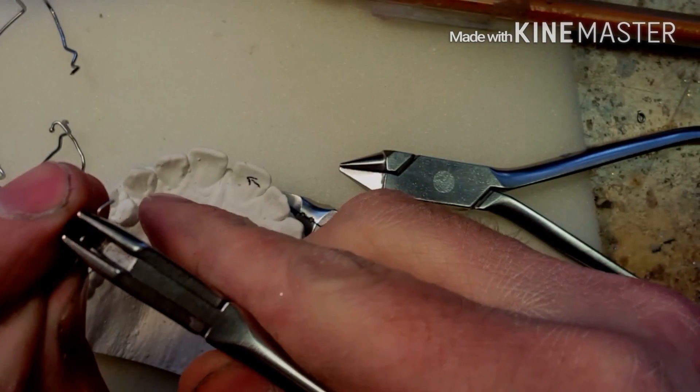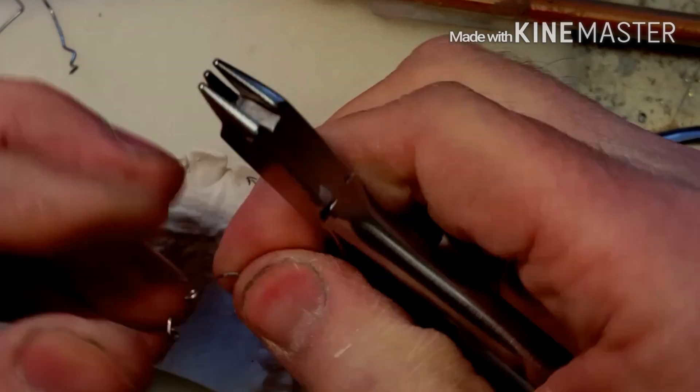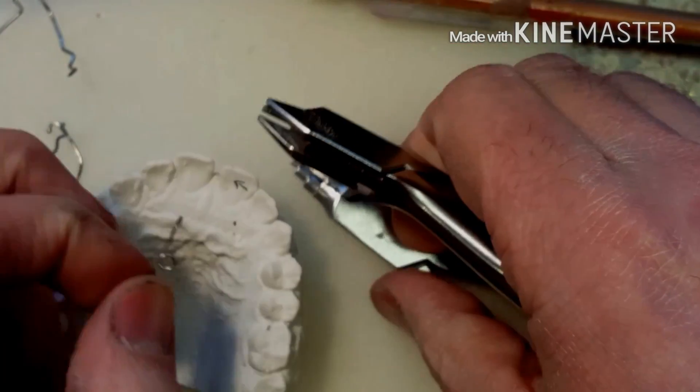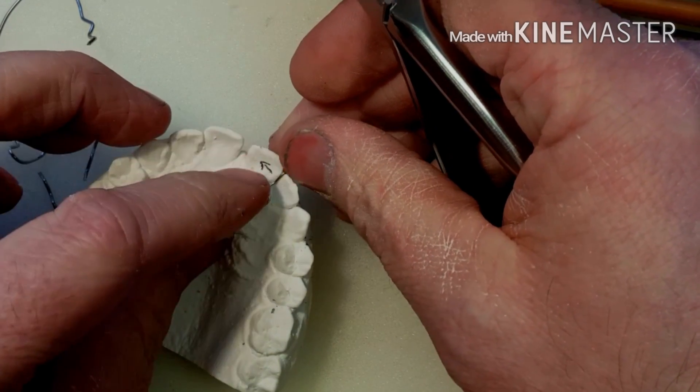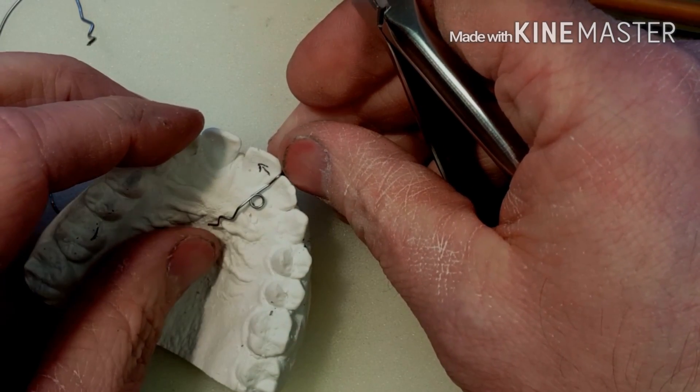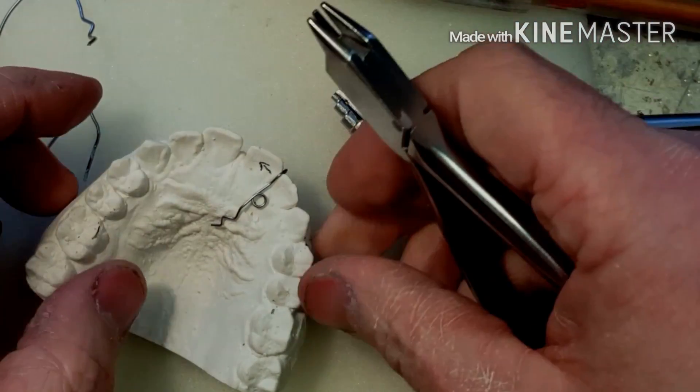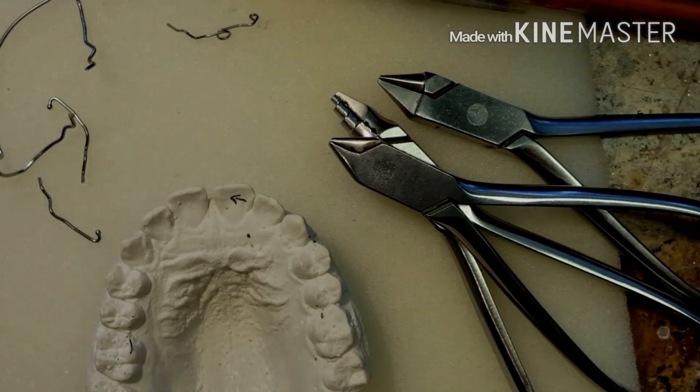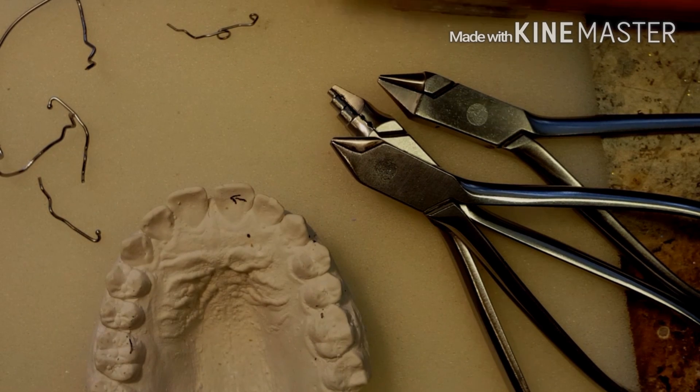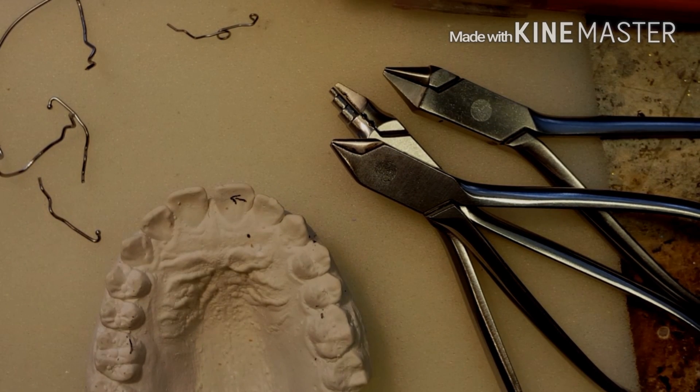You're going to lay the spring on the model, but the trick is that it has to allow space underneath for the acrylic. Now what I did in this video is I sped up the patient's right side because I didn't want to bore you to tears, so I'm going to speed it up.